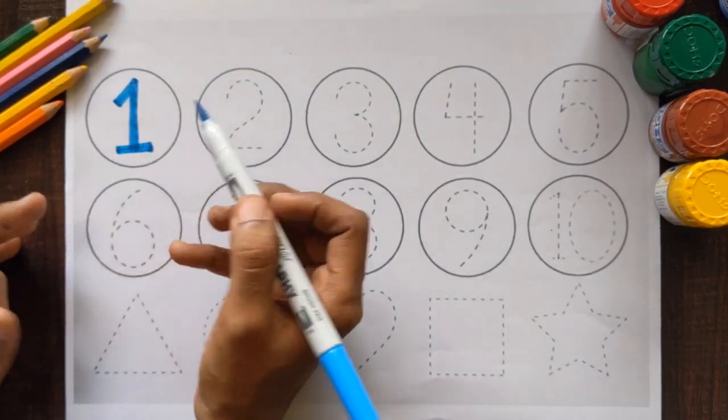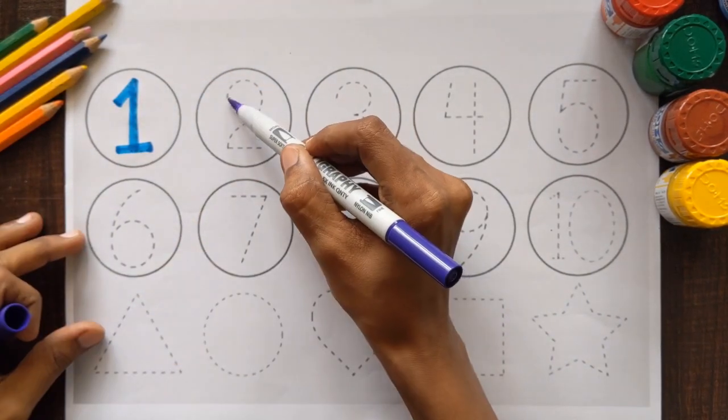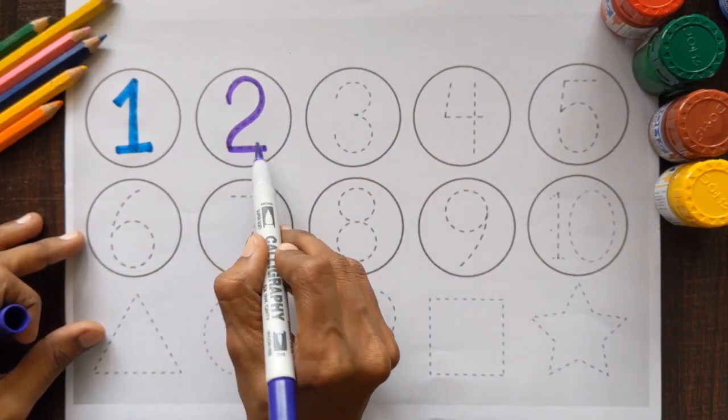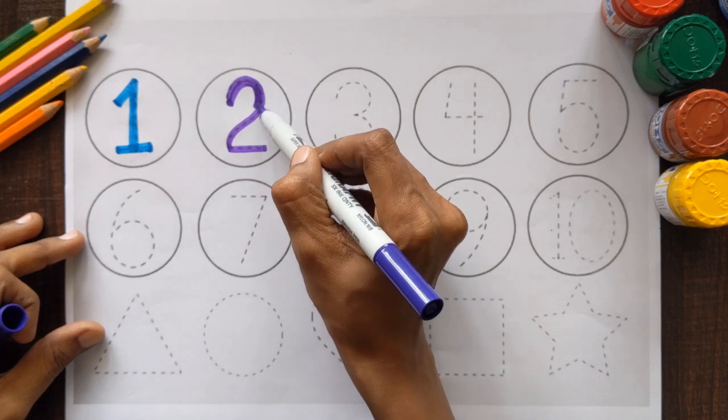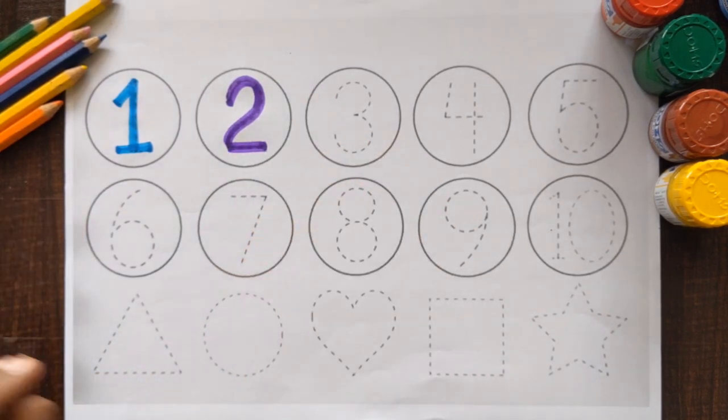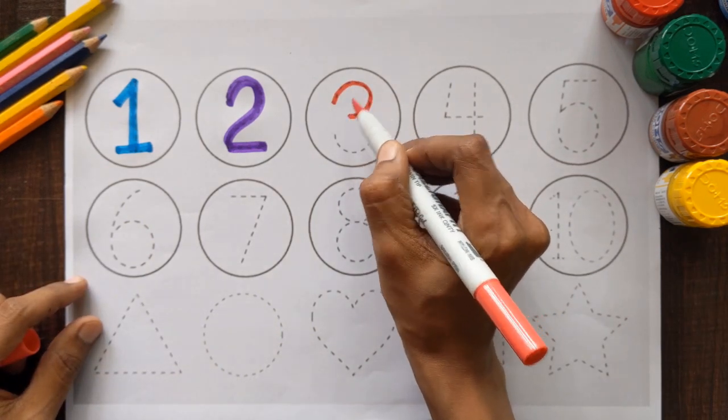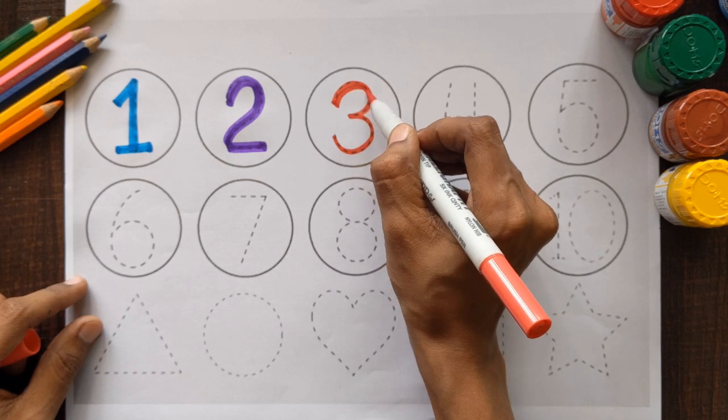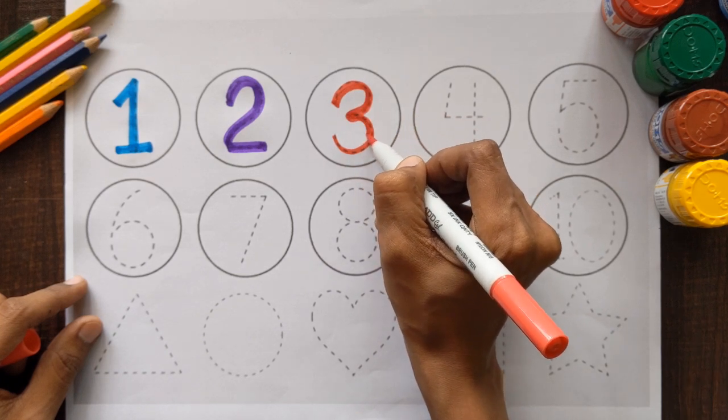Number 1, sky blue color. Number 2, violet color. Next is number 3, red color.